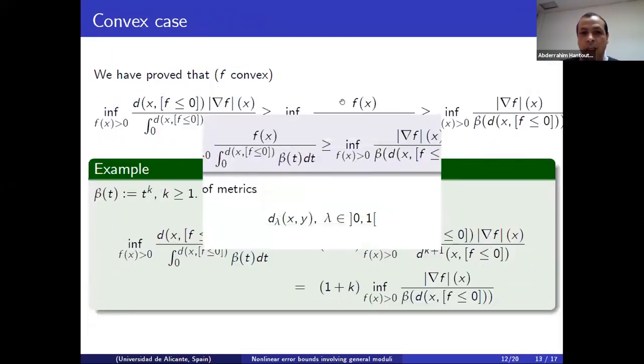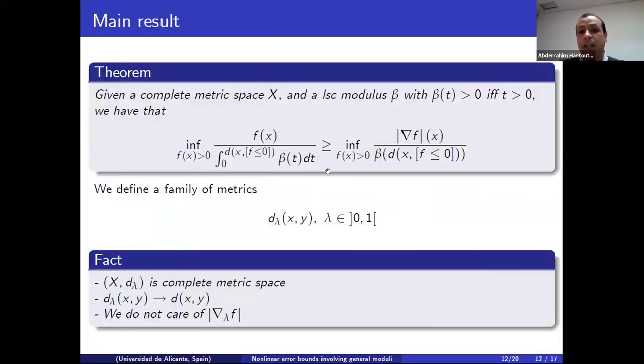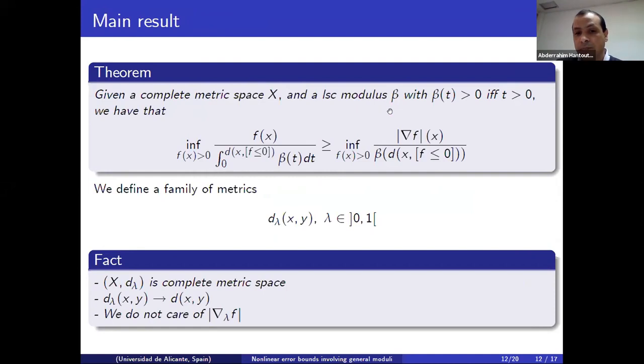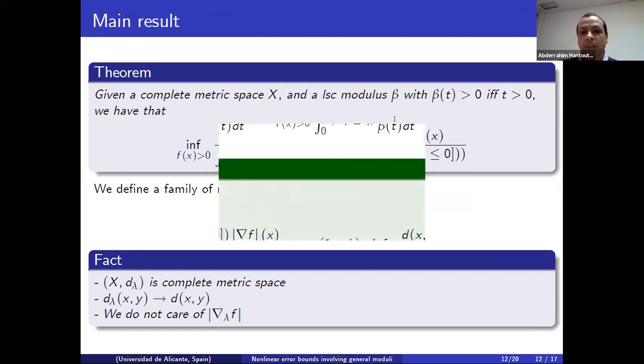The most important thing in our research is that we do not rely on changing the metric. The proof we gave is completely dependent on the variational principle. What we use is a family of metrics that satisfy this property — they approximate our original metric in a well-controlled manner — and we do not need to consider the gradient or slope of this function. The result we obtain assumes only that the modulus beta is lower semi-continuous.